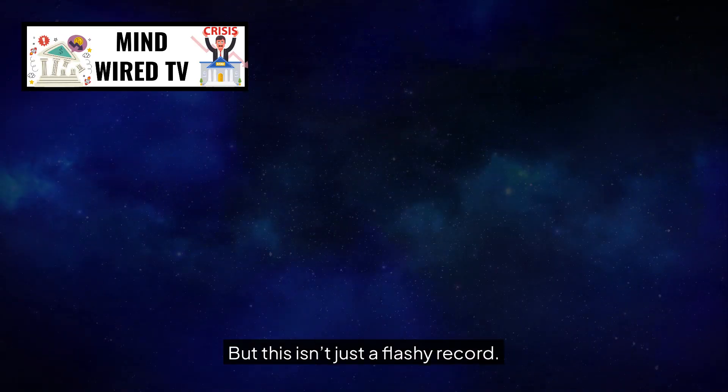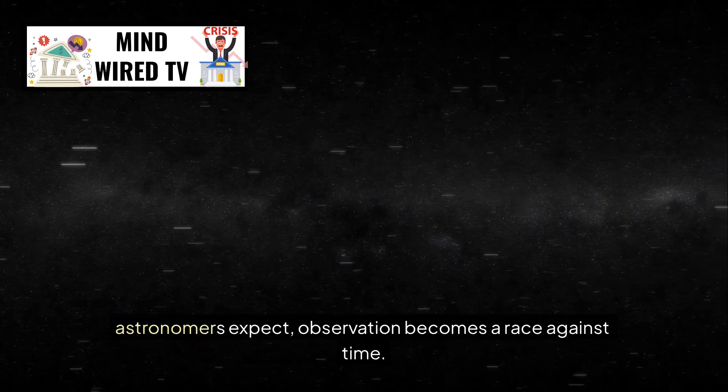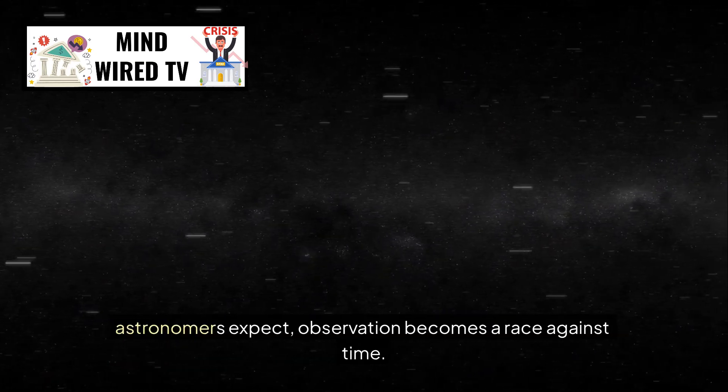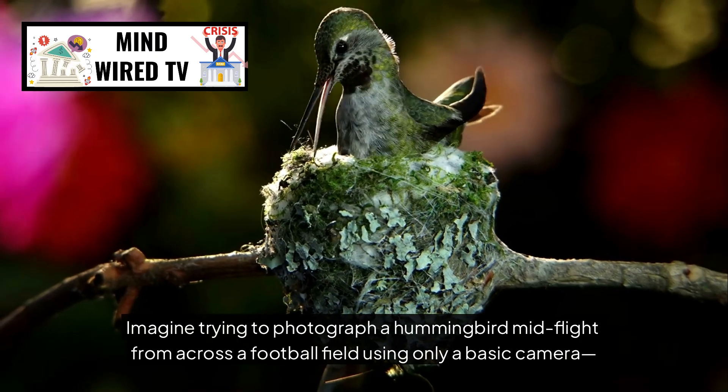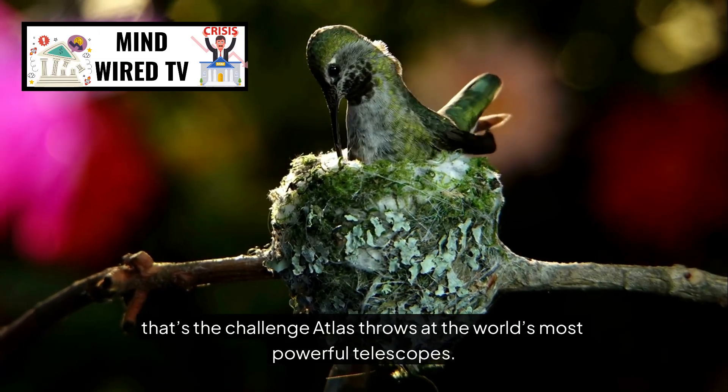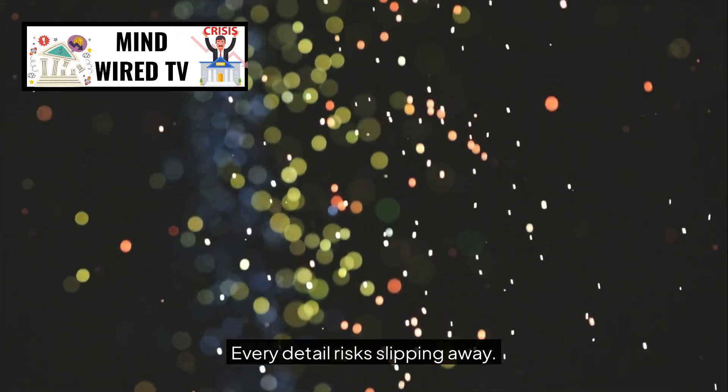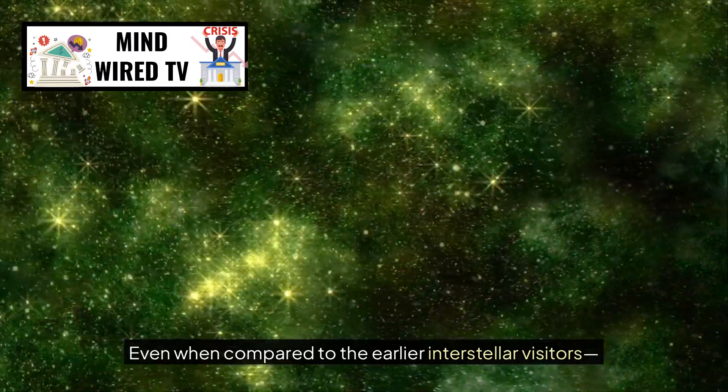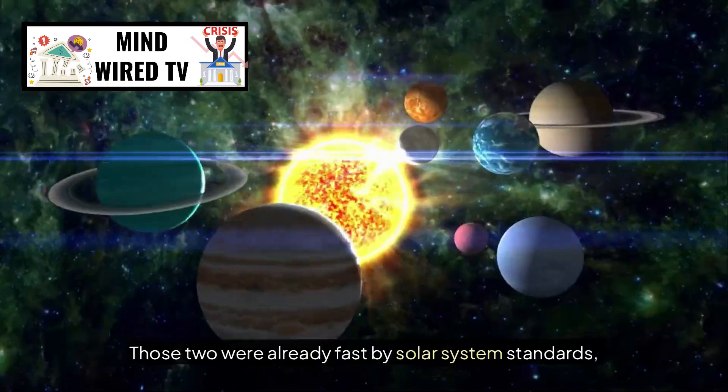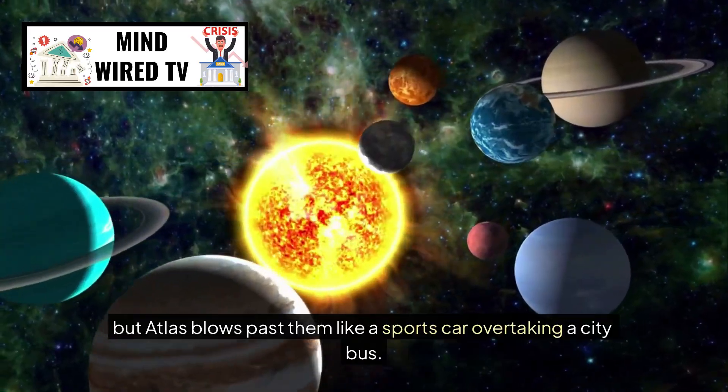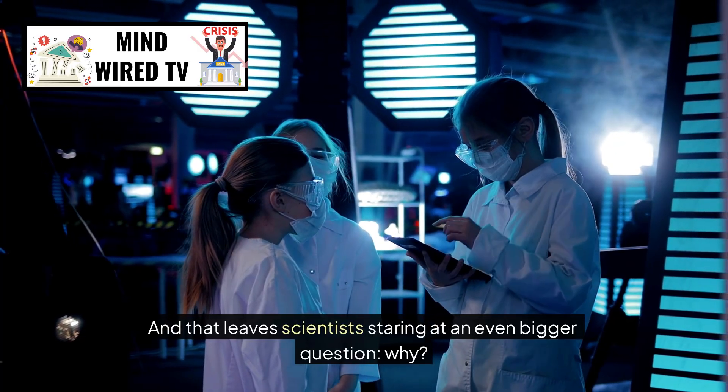But this isn't just a flashy record. Its speed changes everything. When an object crosses the sky at twice the rate astronomers expect, observation becomes a race against time. Imagine trying to photograph a hummingbird mid-flight from across a football field using only a basic camera. That's the challenge Atlas throws at the world's most powerful telescopes. Every second counts. Every detail risks slipping away. Even when compared to the earlier interstellar visitors, Oumuamua in 2017, Atlas sets a new bar. Those two were already fast by solar system standards. But Atlas blows past them like a sports car overtaking a city bus.